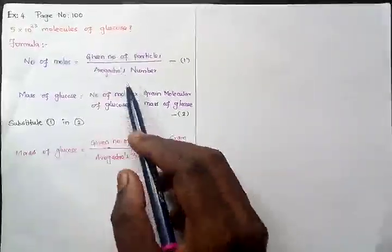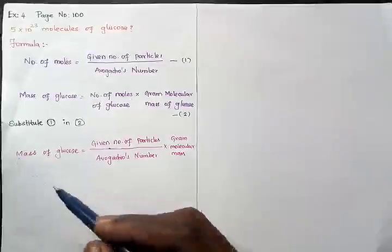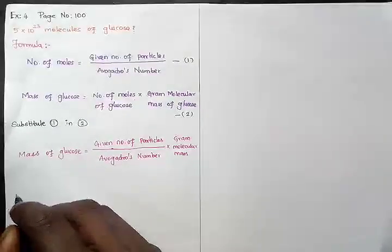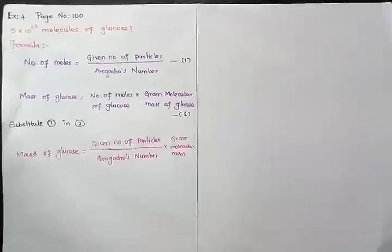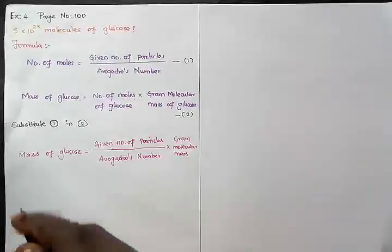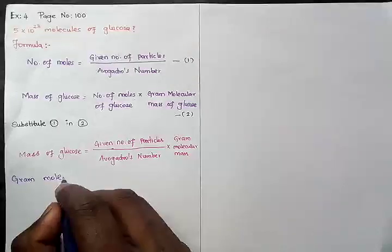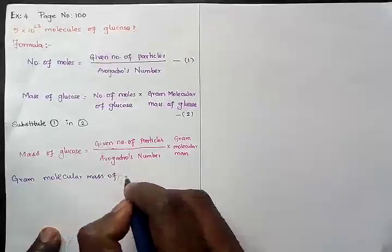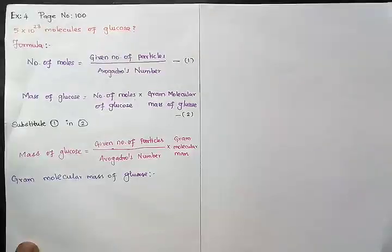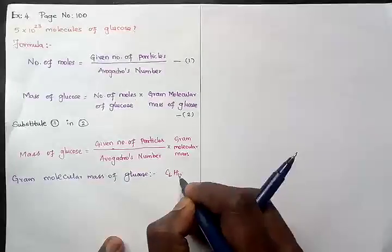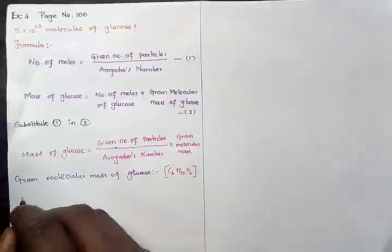We can do this in either two steps or in a single step. I'm going with a single step. Now I need to calculate the gram molecular mass because it's not directly given in the problem. So let us calculate the gram molecular mass of glucose. The formula for glucose is C6H12O6.